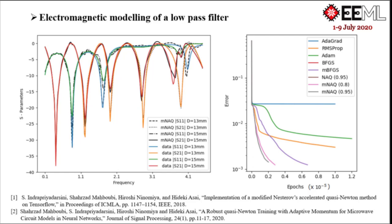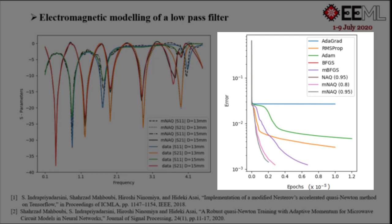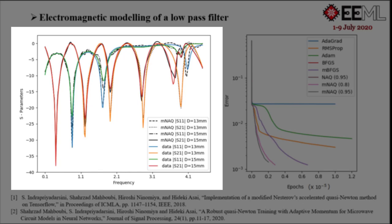Electromagnetic modeling is a highly non-linear problem and takes about several hours to days to get the exact solution. Also, the original model is computationally expensive to obtain. In this work, we have proposed a modified Nesterov's accelerated method for training neural networks, and here the results in modeling a low-pass filter are shown. Compared to the popular first-order methods, we can see that the proposed MNAC method has faster convergence. Further, the results of the neural network model trained with MNAC are in good correlation with the original model.